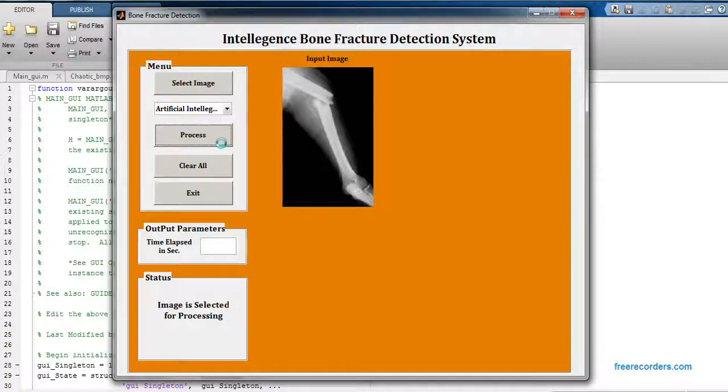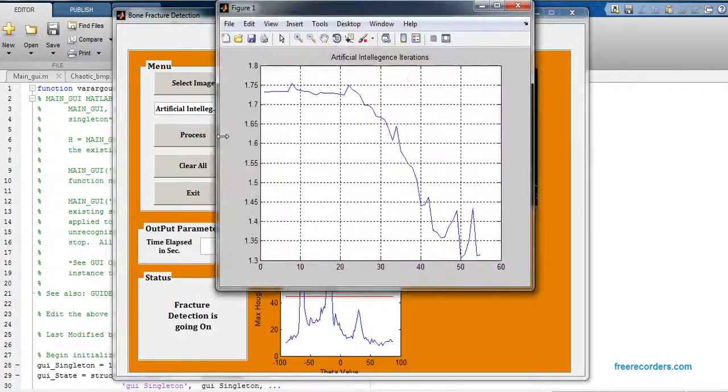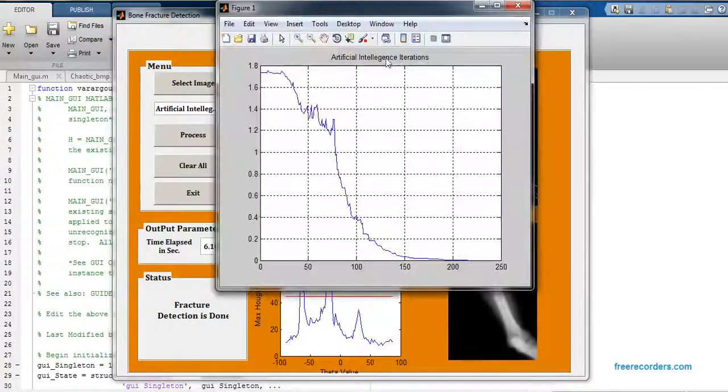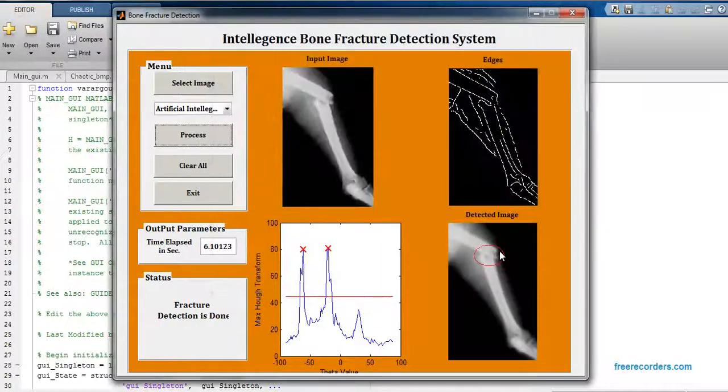And just click on process. So it will give you proper result. These are the iterations of the AI and here we get the respective output. Okay, now just clear all.